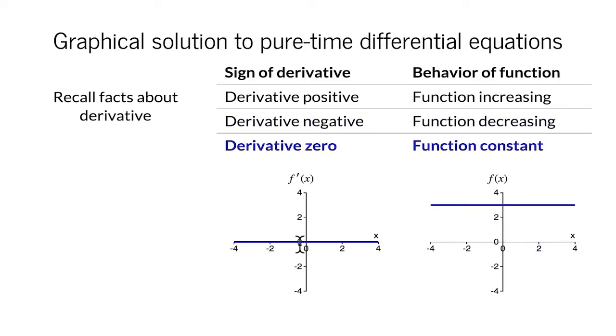The derivative might also be zero, in which case the function is not changing at all, but is a constant.